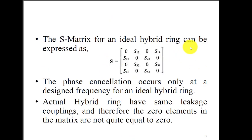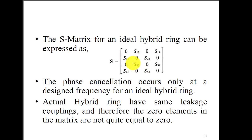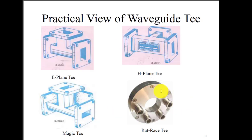The S-matrix of the hybrid ring T-junction has all diagonal elements equal to zero since all four ports are perfectly matched. Coefficients such as S12, S21 and adjacent/opposite port coefficients exist, and the remaining coefficients are found by applying the S-matrix properties. Practical views show the E-plane T-junction, H-plane T-junction, magic T-junction as a combination of E and H, and the rat-race T-junction in its annular ring shape with port separations of 3λg/4, λg/4, λg/4, and λg/4.